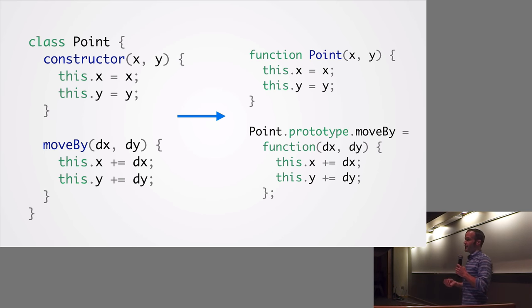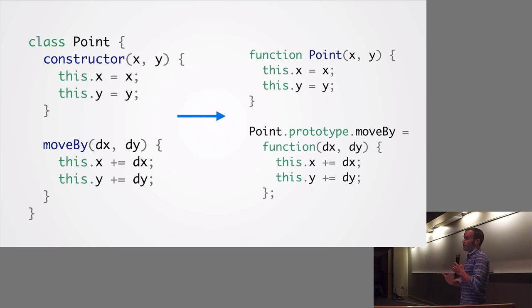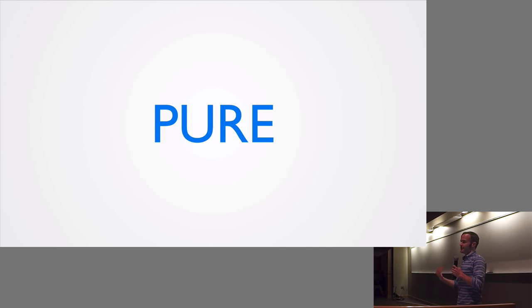Finally, we have ES6 classes. We won't use these in the functional code, but we'll use them to contrast with some object-oriented code. ES6 classes are basically syntactical sugar for constructor functions from JavaScript. A class Point with a constructor method taking x and y arguments and assigning instance variables is the same as a constructor function called Point. The moveBy method is the same as assigning a function to Point's prototype. We'll see this later and contrast it with functional approaches.